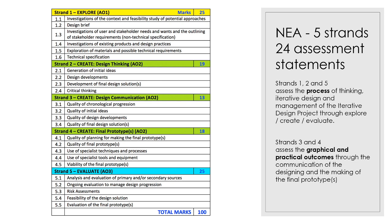Students who struggle to get higher marks are often ones who don't engage in evaluation from a third party, stakeholders, or a user. That impacts their ability to pick up on errors and problems and to progress their project meaningfully. From the outset, you should have a user — we'll talk about that in the following video. We also have risk assessments and, finally, feasibility testing of your product and the final evaluation.